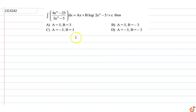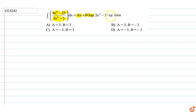In this question we have to find the integral of (4eˣ - 25) upon (2eˣ - 5) dx, which is equal to ax plus b into log of (2eˣ - 5) plus c. Then we have to find out the values of a and b.